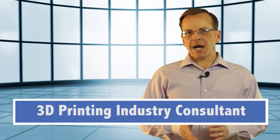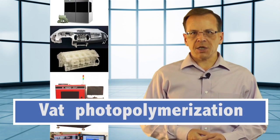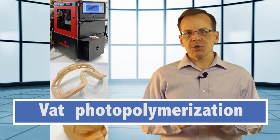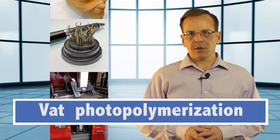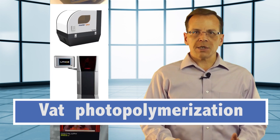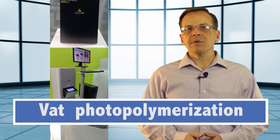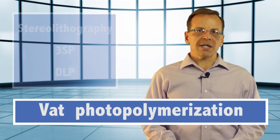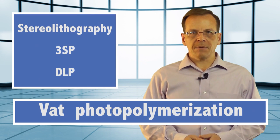In this episode, I'm going to offer you the highlights from the VAT photopolymerization class of 3D printers. These machines use light to solidify a liquid photopolymer. And there's quite a range of new announcements in this class, prices ranging from $5,000 to nearly $1,000,000 and technologies that span stereolithography, 3SP and DLP.